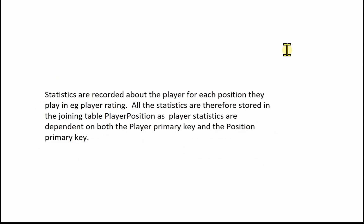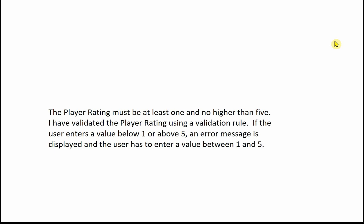The next part covers statistics recorded for player positions. Statistics are recorded about the player for each position they play in, for example the player rating. All statistics are stored in the joining table player position, as the player statistics are dependent on both the player primary key and the position primary key. The player rating must be at least one and no higher than five. I've validated this using a validation rule — if the user enters a value below one or above five, an error message is displayed and they must enter a value between one and five.